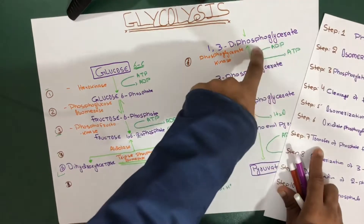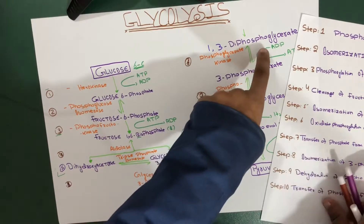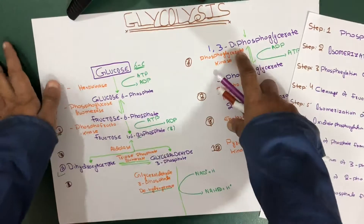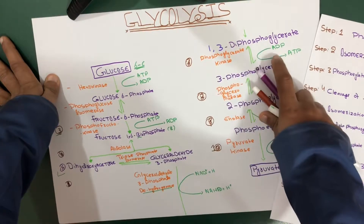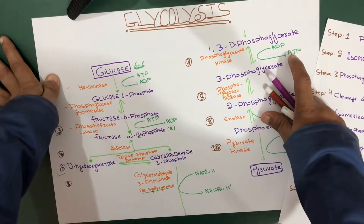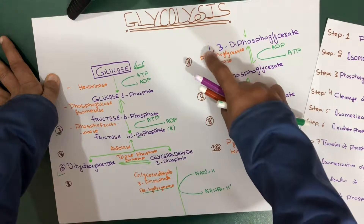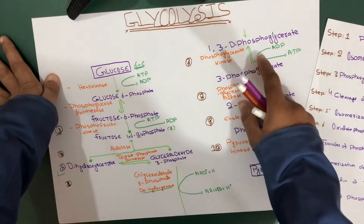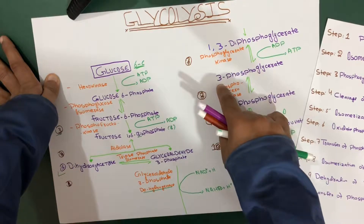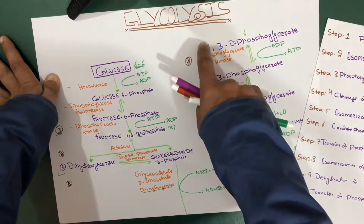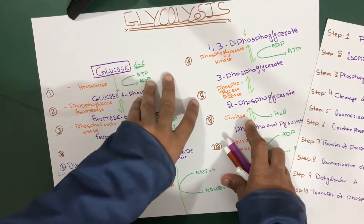Step seven is the transfer of phosphate from 1,3-diphosphoglycerate to ADP. We remove the phosphate from carbon number one of this molecule and give it to ADP using the enzyme phosphoglycerate kinase, forming ATP. The product remaining is 3-phosphoglycerate.